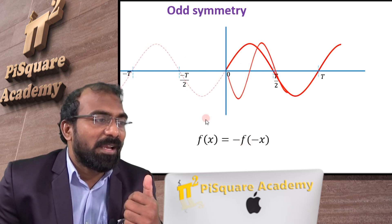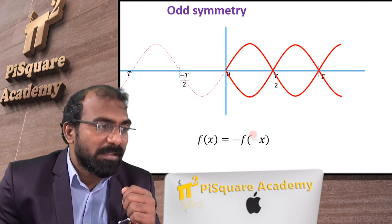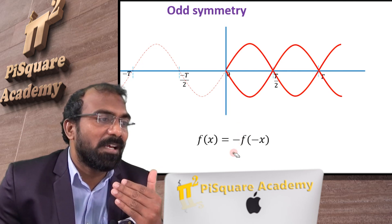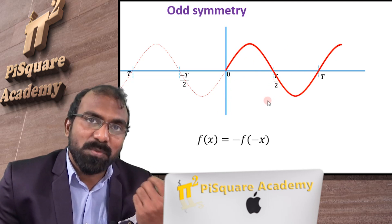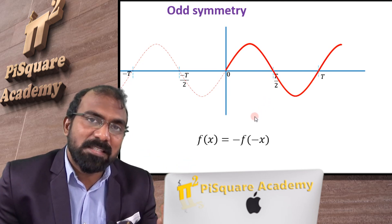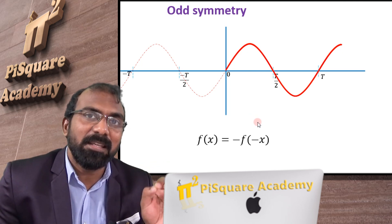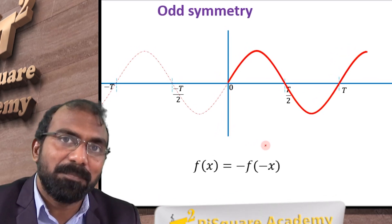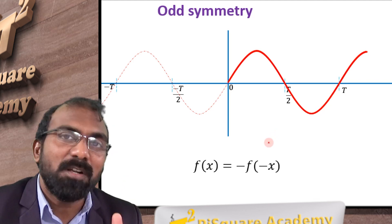I brought the negative x signal to the positive x signal and these two are not overlapped. When will these be overlapped? We need to take the flip of the signal. If you flip this, now these two signals are overlapped. That is what odd symmetry. In the case of even symmetry, we just brought the negative x signal to the positive x signal and that itself overlaps. But in the case of odd symmetry, we brought the negative signal to the positive side and then took the flip. Then only these two signals become overlapped. That is what odd symmetry.